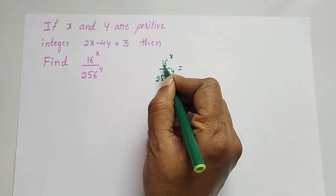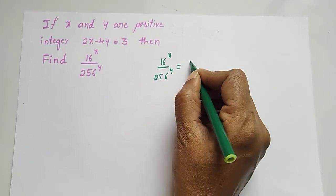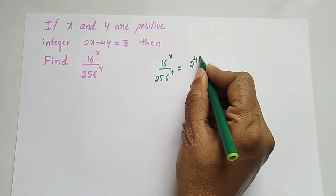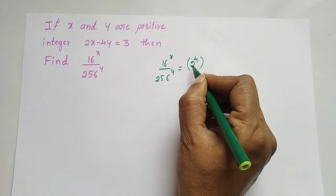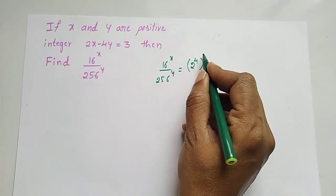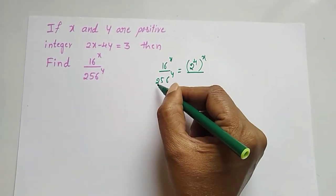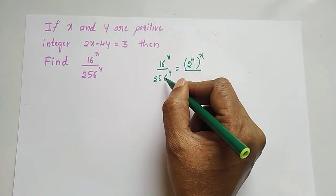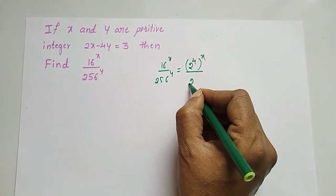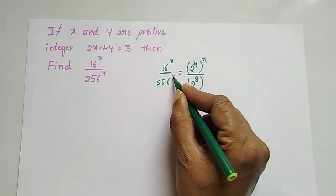16 to the power x divided by 256 to the power y. Here 16 is 2 to the power 4, and 256 is 2 to the power 8. So we rewrite as 2 to the power 4x divided by 2 to the power 8y.